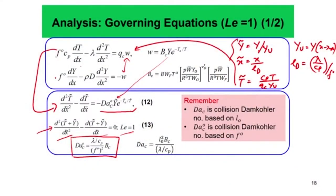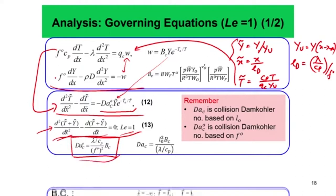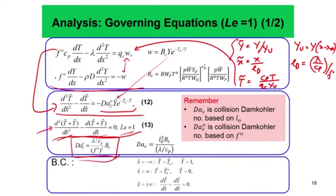The one-dimensional steady energy equation in normalized form is: d²T̃/dx̃² − dT̃/dx̃ = −Da_c · Ỹ · exp(−T̃_A/T̃). The combined species-energy equation is: d²(T̃ + Ỹ)/dx̃² − d(T̃ + Ỹ)/dx̃ = 0. The boundary conditions are: at x → −∞, T̃ = T̃_u and Ỹ = 1; at x → +∞, T̃ = T̃_B0 and Ỹ = 0; and gradients of both T̃ and Ỹ go to zero at both boundaries.